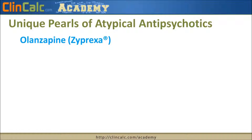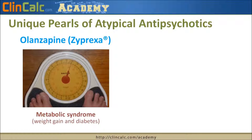One way to remember the atypical antipsychotics is to distinguish each individually in terms of what makes them unique. With olanzapine or Zyprexa, the biggest adverse effect compared to other atypicals is metabolic syndrome — weight gain and diabetes are very concerning and very common with this medication.